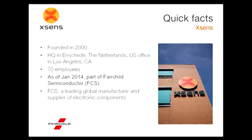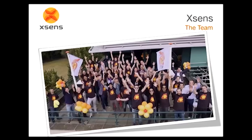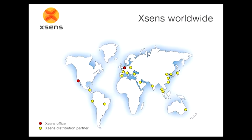Xsens was founded in 2000 and is based in the Netherlands. While Chris and I operate out of the US office in Los Angeles, we consist of about 70 employees. As of 2014, we were acquired by Fairchild Semiconductor, which has backed us and allowed us to make significant developments in our recent generation of hardware. We recently celebrated our 15-year anniversary, so while the technology might seem new, we've actually been in this for quite some time with distributors worldwide.